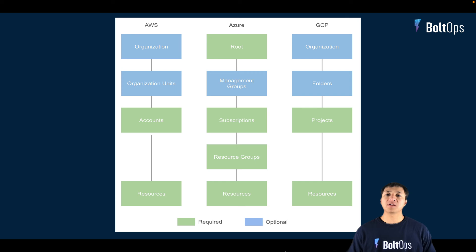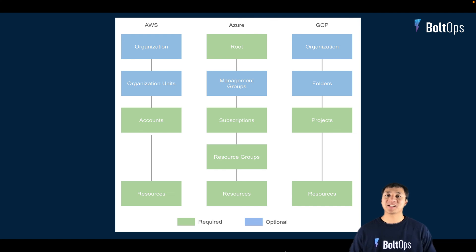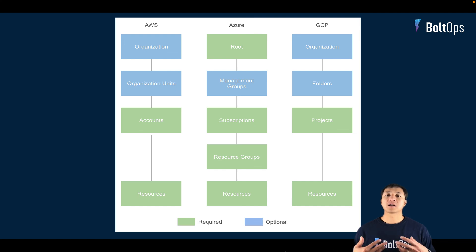In Azure, the top-level item is the root — that's the all-encapsulating container of everything. Underneath that you have management groups, and you can think of management groups, AWS organizational units, and Google folders as essentially equivalent: they're ways to organize divisions, departments, or even companies and subdivisions together. For Google, at the very top level is the organization. So there you have it — these are the equivalent components of the hierarchy across the three cloud providers.